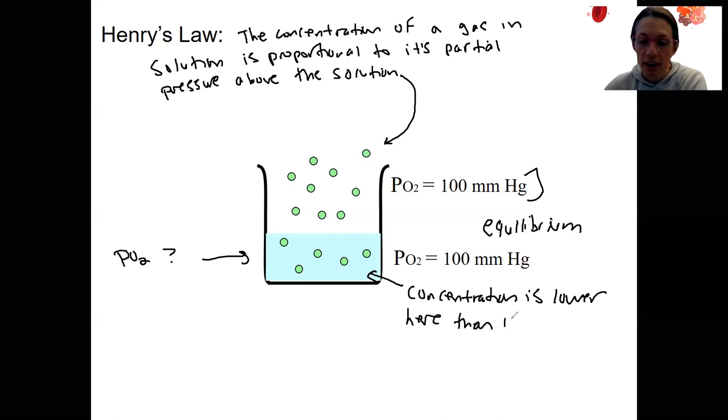And this is why we look at partial pressure gradients, not concentration gradients of gases. Because when we're looking at solutions, solubility is a significant factor. So Henry's law is going to underlie principle of diffusion of gases in the capillaries and alveoli and between the capillaries and interstitial fluid by the cells.